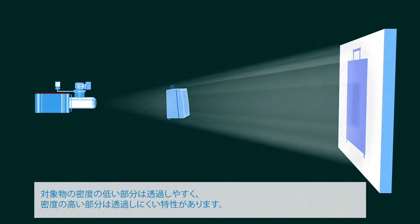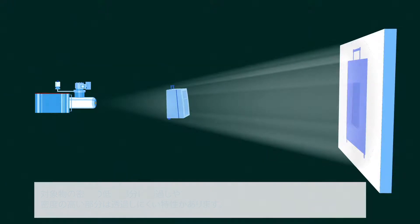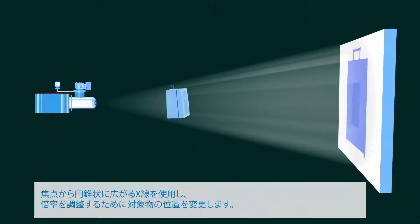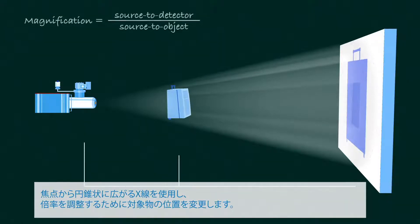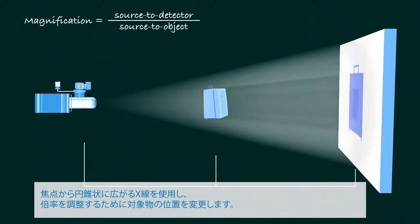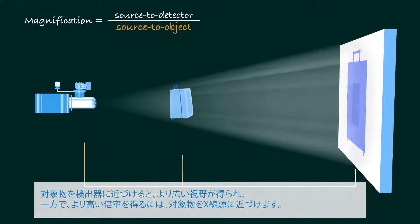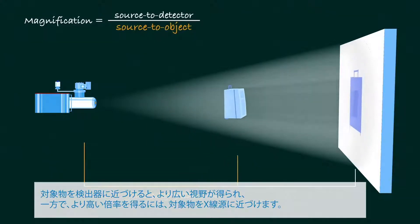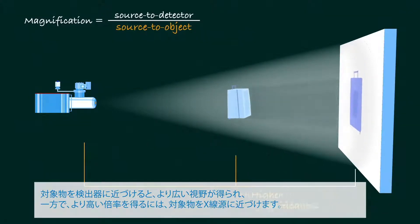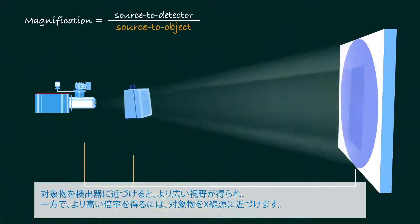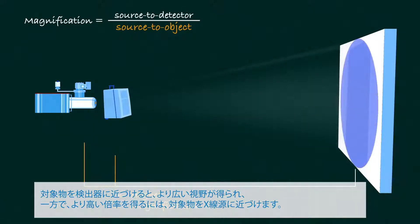Low-density volumes of the object allow high transmission, while high-density volumes allow low transmission. With a point X-ray source, magnification and illuminated volume can be adjusted. Larger coverage is achieved by moving the object closer to the detector, while higher magnification is achieved by moving the object closer to the source.